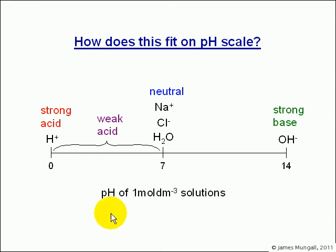On the pH scale, if we have 1 mole per decimetre cubed solutions, a strong acid will have a pH of 0, water or neutral ions will have pHs of 7 and a strong base of 14, a weak acid will be between 0 and 7.